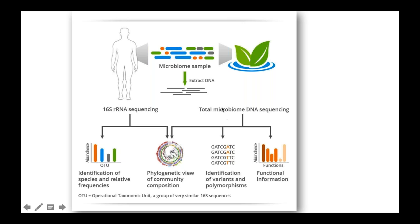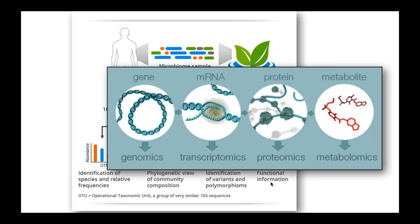The second approach is total microbiome DNA sequencing, which identifies variants and polymorphisms and also gives some functional information. What the microbes are actually doing is really understood by these other types of studies — not only genomics but also transcriptomics, which tells us what types of RNA are formed, proteomics which tells us the translation of RNA into protein, and finally metabolomics, which shows how the proteins work together in various metabolic pathways.